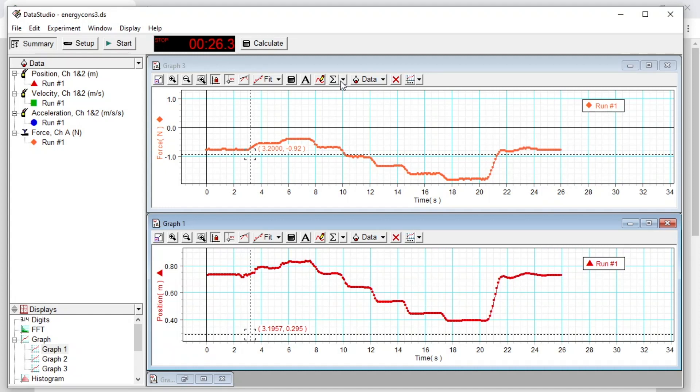Using the statistics tool, we can extract position and force data from the chart by averaging over the time segments where we held the cart steady, and then applying a linear fit to this data to determine the spring constant and equilibrium position.